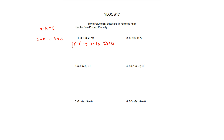So you have x minus 4 equals zero and x minus 2 equals zero, and we know that both of these are the solutions. To simplify, we move 4 to the other side, so it's x equals 4. And you can do the same for the other by moving 2 to the other side, so it becomes x equals 2. So your answer will be x equals 4 and x equals 2.